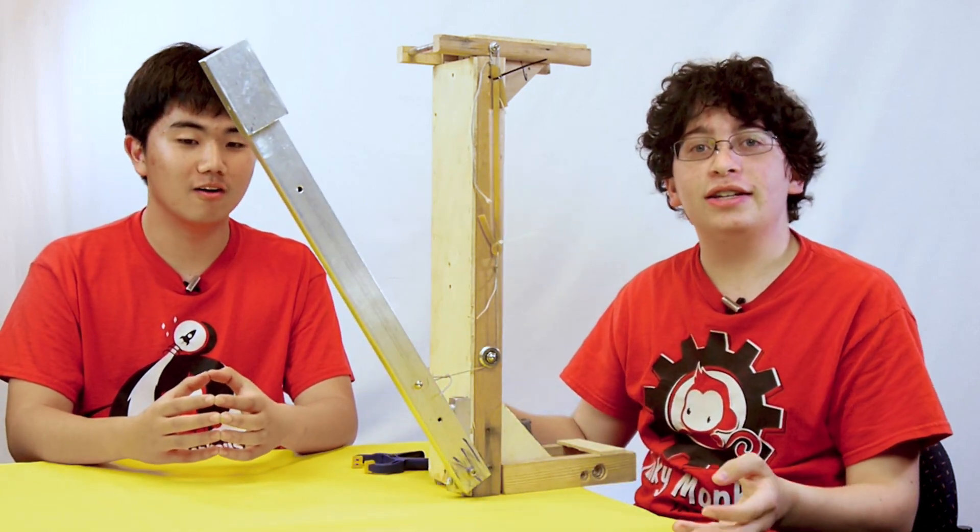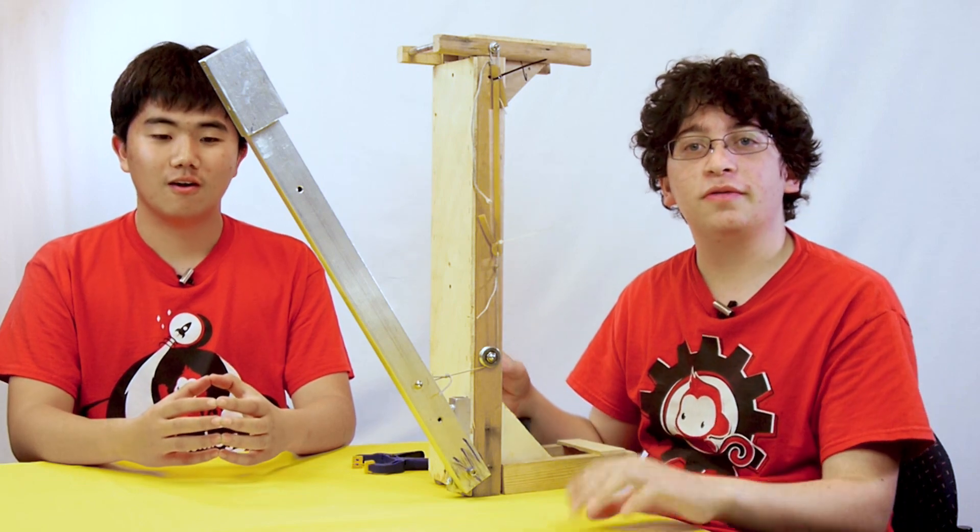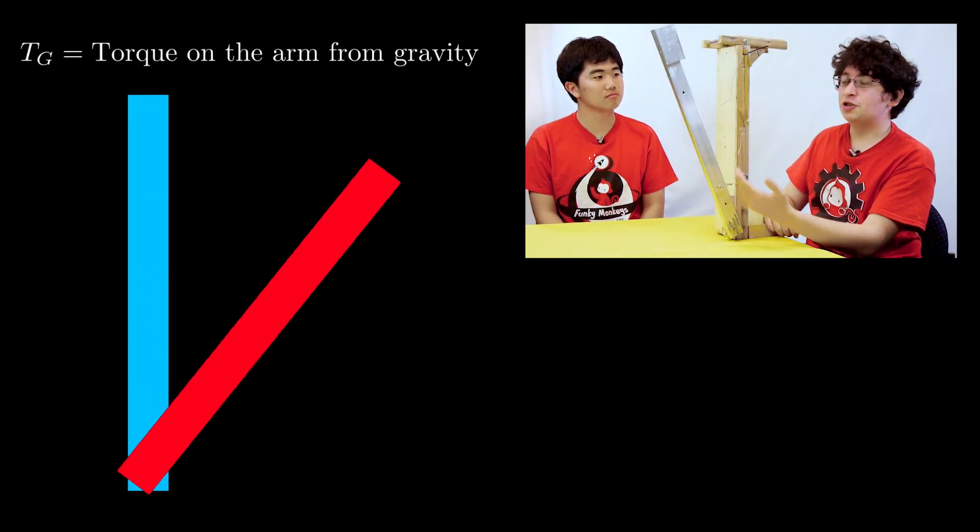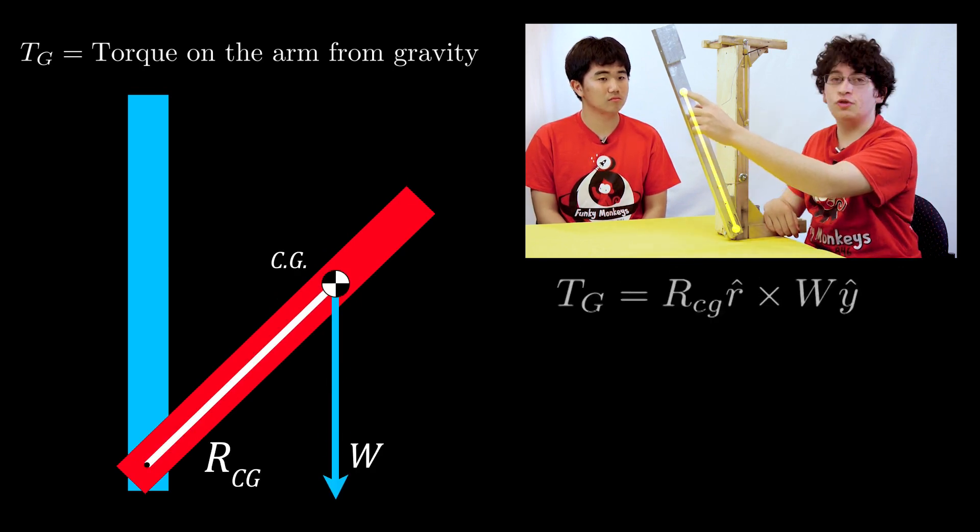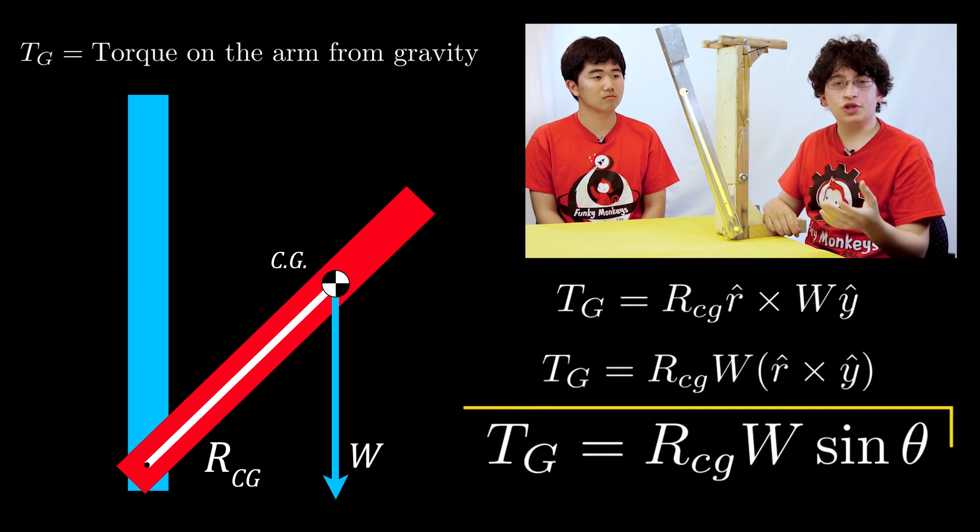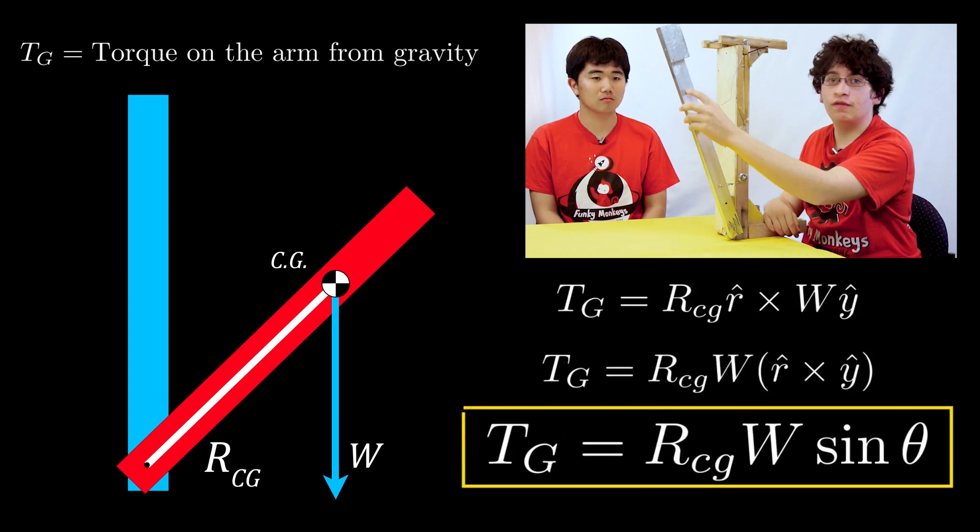So the key to getting this right is to get the math to work out. So the first step for doing the math is to calculate the torque of the arm due to gravity. To do that, first you find the radius of the arm to the center of gravity and take the cross product of that with the weight of the arm.